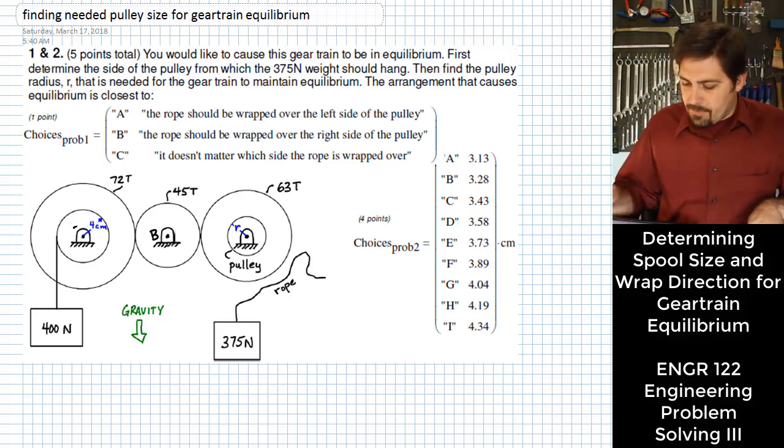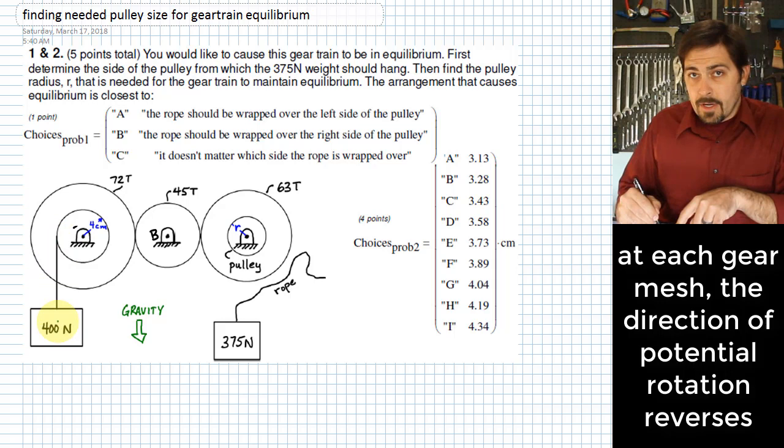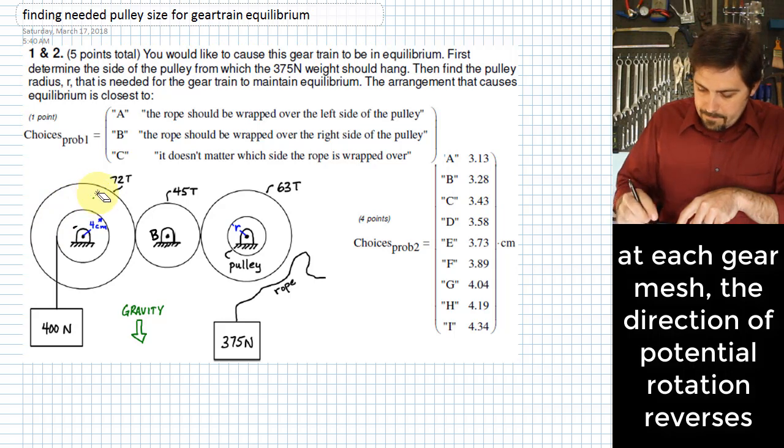We'll do that first part first. To do that, we'll look at it and see that the 400N weight here would tend to try to rotate that very first gear in a counterclockwise direction.